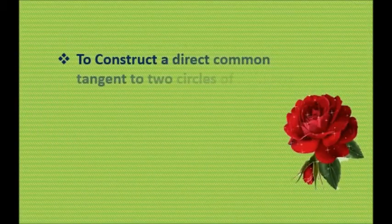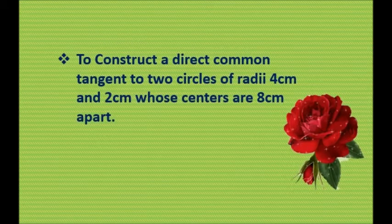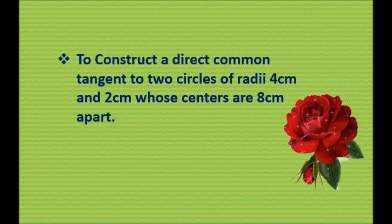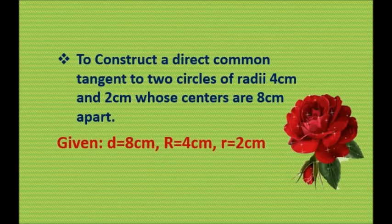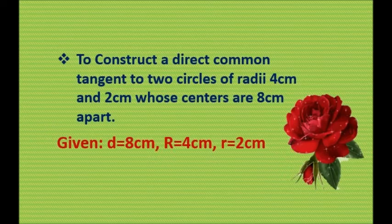To construct a direct common tangent to two circles of radii 4 cm and 2 cm whose centers are 8 cm apart. Firstly write down the given data. The distance between the centers of the circles is d = 8 cm, capital R = 4 cm, and small r = 2 cm.